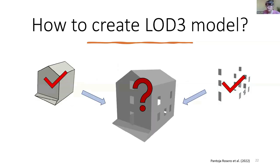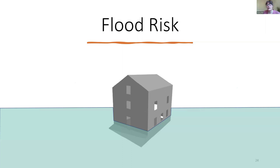We've got windows and doors in 3D space and can merge it all together for our final model. You can see the potential for flood risk assessment — not only is it a good way to visualize, but at the city scale you can automatically run analyses, detect what's going on, see where the risk is, and determine which buildings are going to have more issues than others.